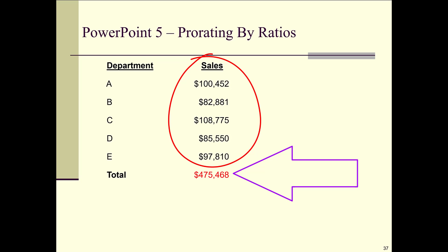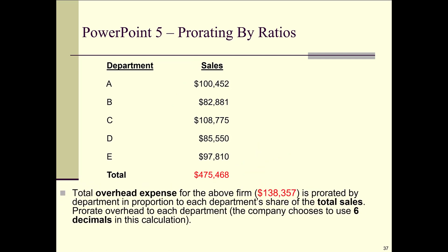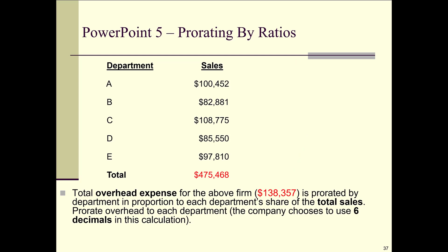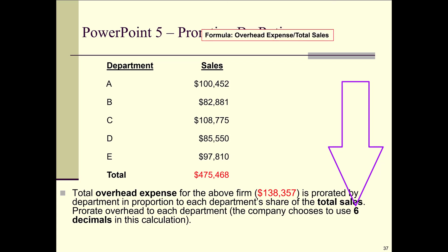Your job as the accountant is to take the overhead expense — which totals $138,357, covering things like electricity and insurance — and divide it up, also called prorating, by department in proportion to each department's share of total sales. The more sales a department generated, the more overhead expenses get allocated to their budget. Set your decimal selector to six for accuracy.